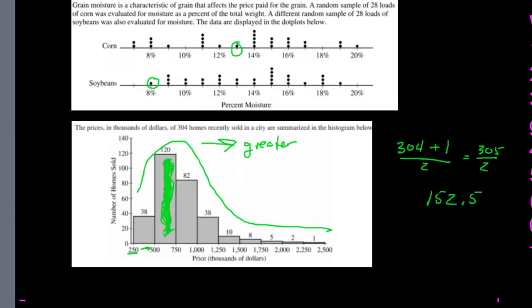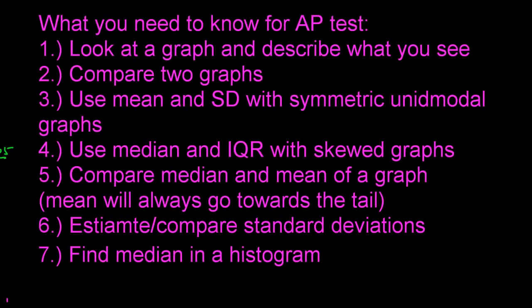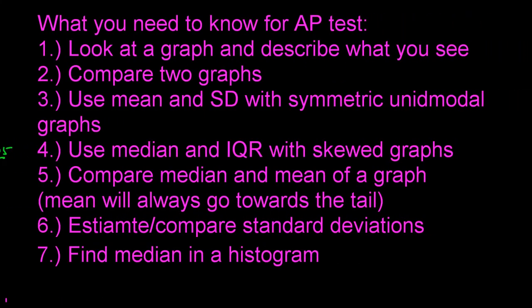For the AP test: you must know how to look at a graph and describe what you see — shape, center, spread, and outliers — and do it in context. Don't just give numbers; use units and the words from the problem. When you compare two graphs, write sentences comparing center, spread, outliers, and shape.